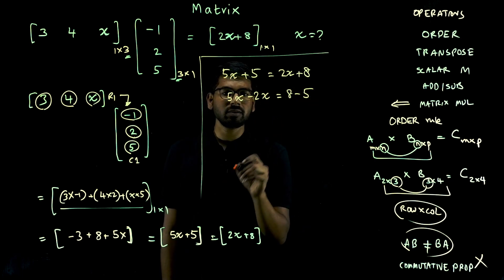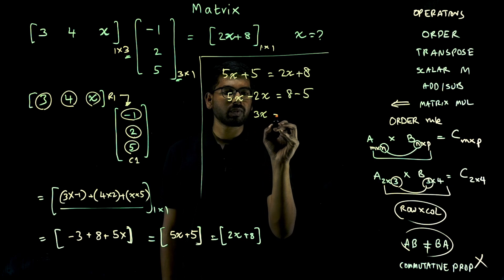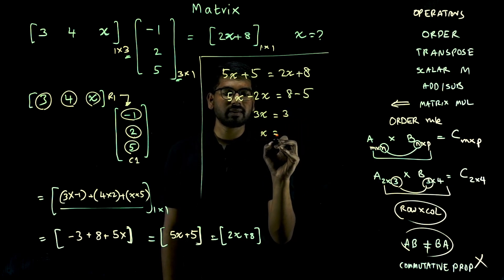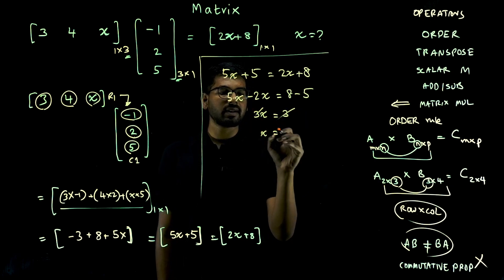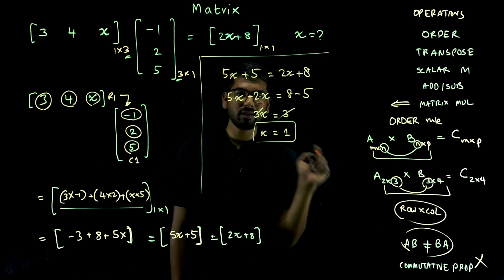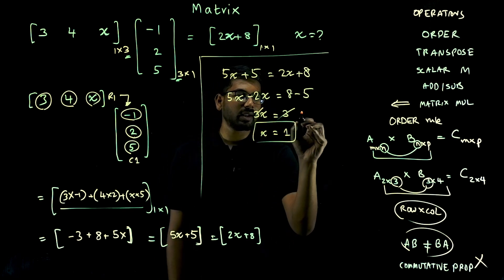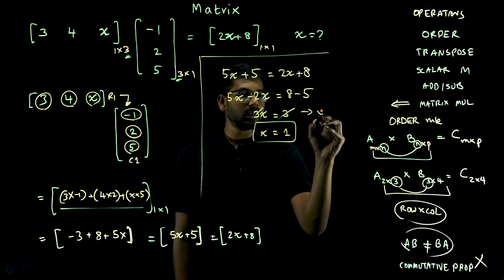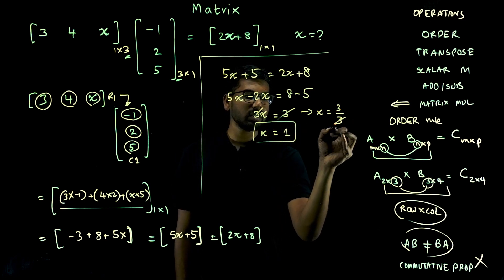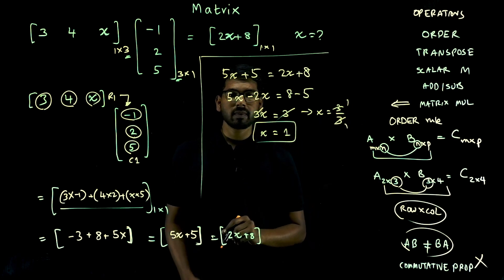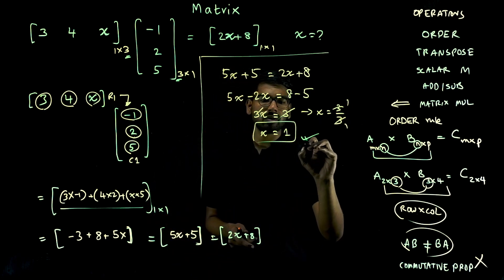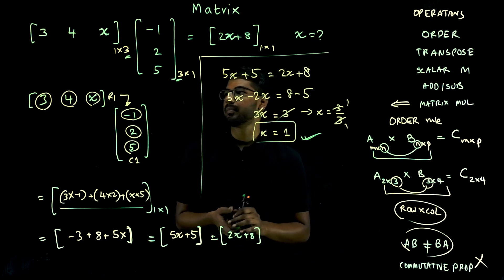Solving: 5x plus 5 equals 2x plus 8. Bringing 2x to the left: 5x minus 2x equals 8 minus 5, so 3x equals 3, therefore x equals 1. This is how questions will be asked in your exam.